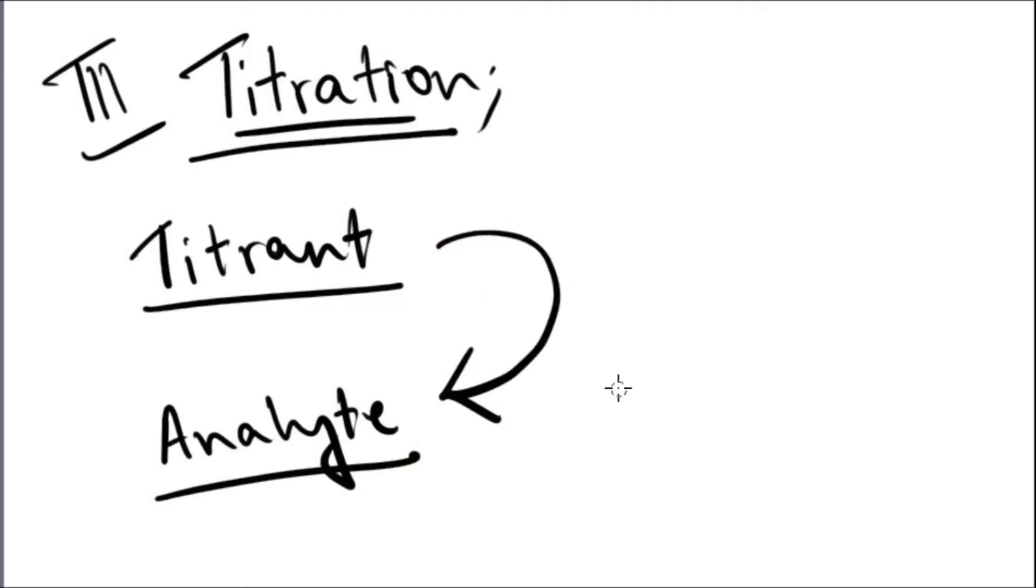It is important to know that the titrant is added to the analyte. So there are two terms that you need to know. One is endpoint of the titration and one is equivalence point of the titration.